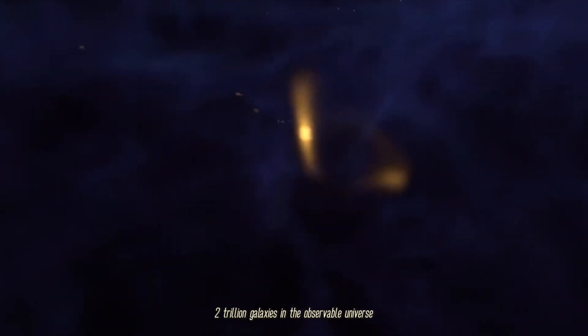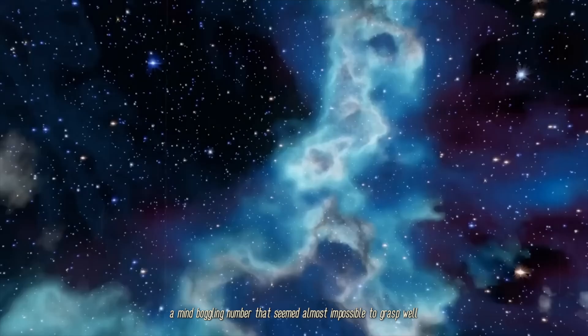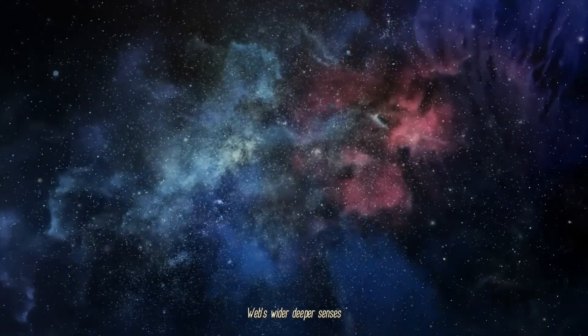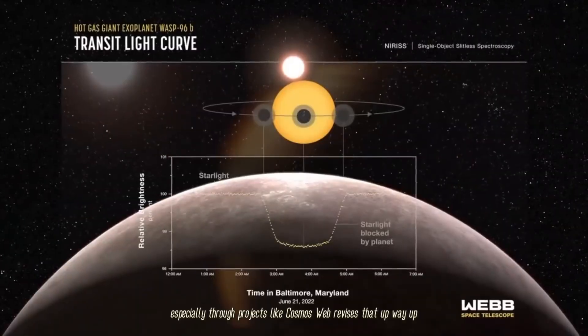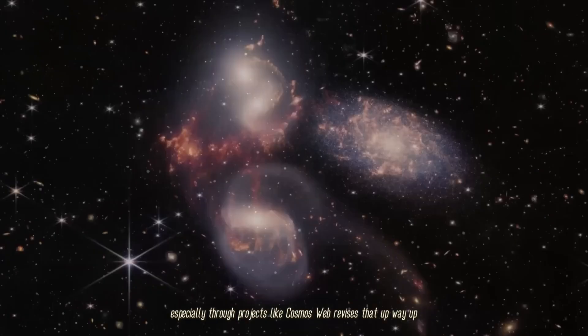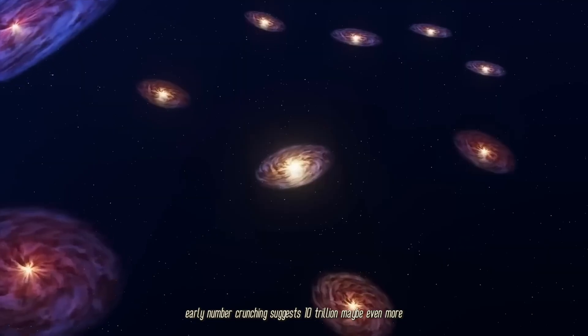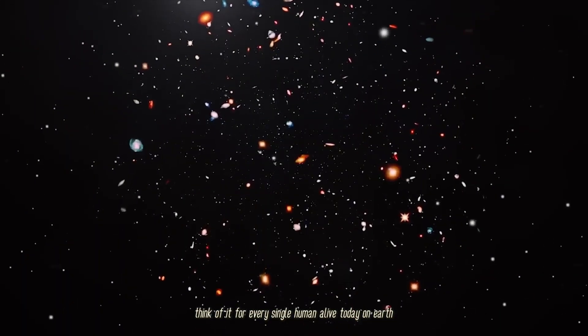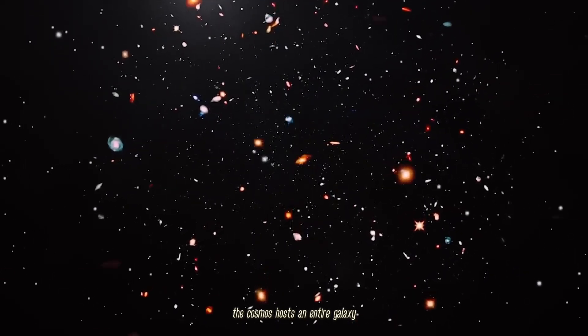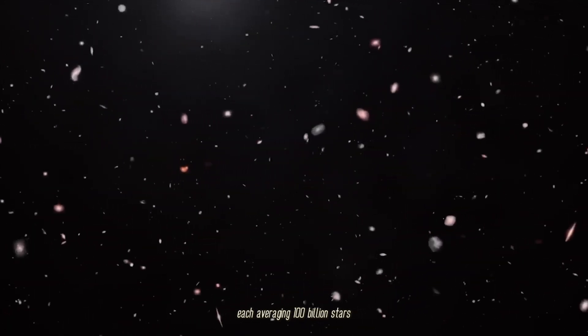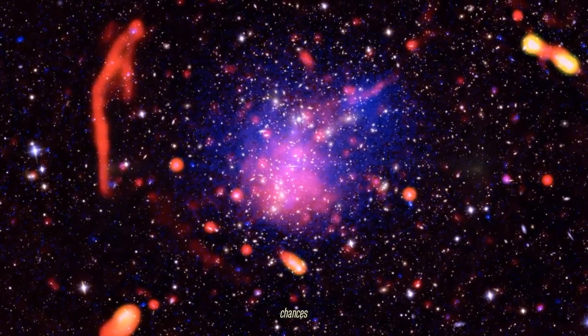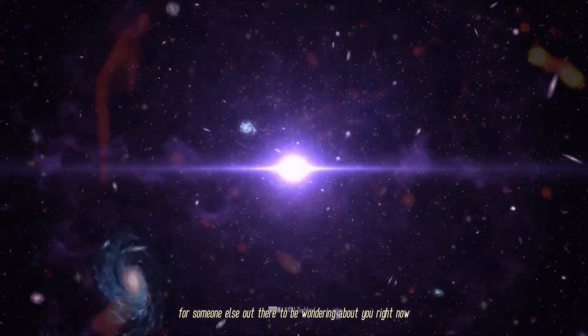Remember when astronomers claimed two trillion galaxies in the observable universe? Well, Webb's wider, deeper senses, especially through projects like COSMOS-Web, revises that up—way up. Early number crunching suggests 10 trillion, maybe even more. Think of it: for every single human alive today on Earth, the cosmos hosts an entire galaxy, each averaging 100 billion stars. If intelligent life emerges just once per galaxy, that's 10 trillion chances for someone else out there to be wondering about you right now.